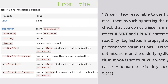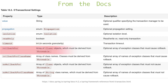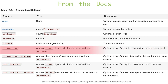Next is timeout, in which you can give the number of seconds before timeout. And then there is rollbackFor, which is an array of classes extending from Throwable. These are the exceptions that must cause a rollback. The rest of the attributes are rollbackForClassName, noRollbackFor, and noRollbackForClassName, which you can look at if you want to use them.